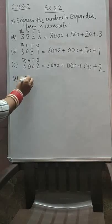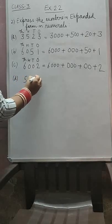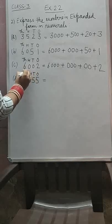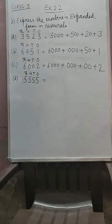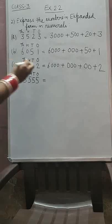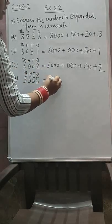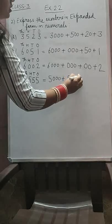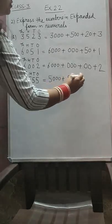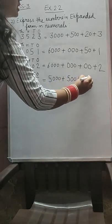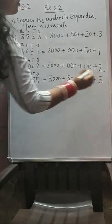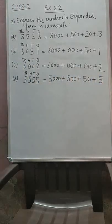D part: 5, 5, 5, 5. This is 1, tens, 100, 1000. How many thousands we have? Only 5,000. How many hundreds we have? 5 hundreds. How many tens we have? 5 tens, that is 50. How many ones we have? Only 5 ones. So I think question 2 is clear to all of you.